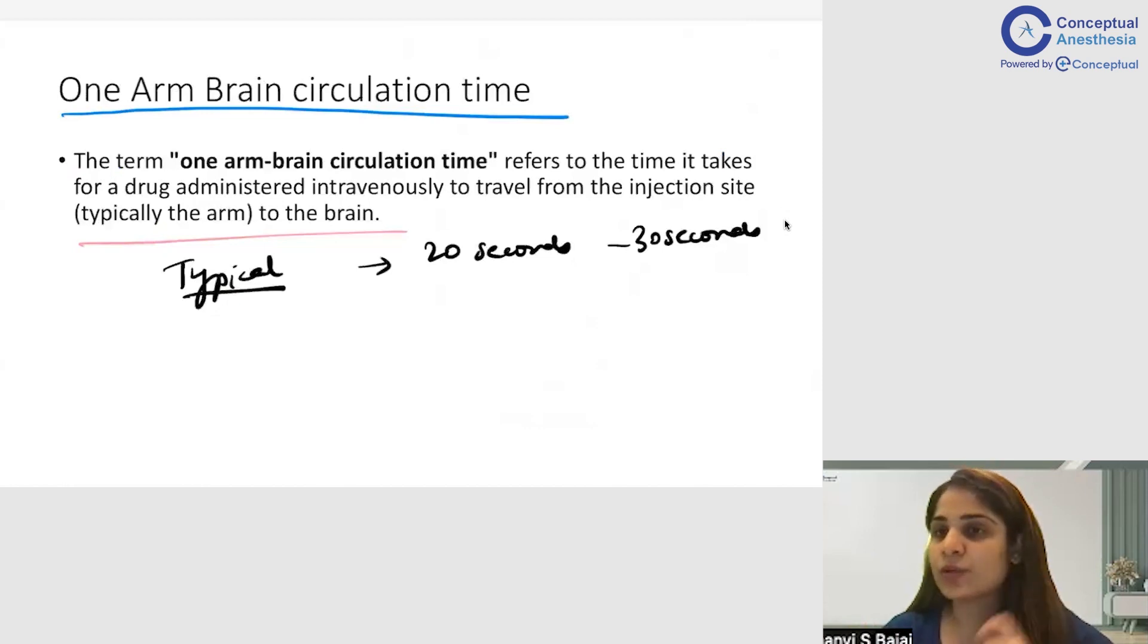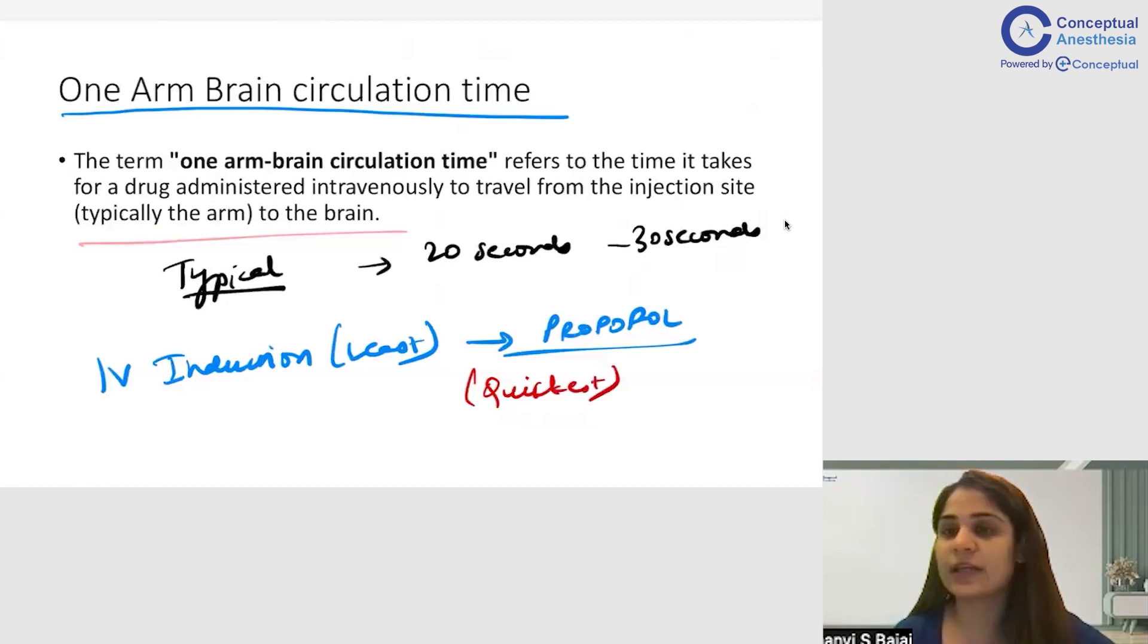And there is one more question that comes over here: Which IV induction agent gives the least one arm brain circulation time? So propofol is the IV induction agent that gives the least one arm brain circulation time, and that is why it is the quickest to act. You give propofol and your patient will become unconscious in literally 15 to 20 seconds. So that is the importance of one arm brain circulation time.